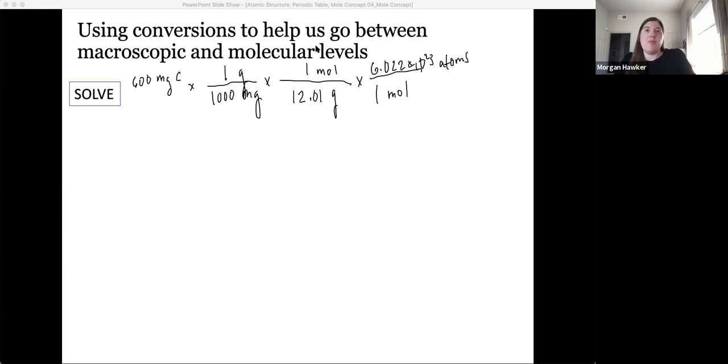Next, I need to convert from moles to number of atoms. I know that in every one mole, there are 6.022 times 10 to the 23rd atoms. So now when I do this problem, milligrams cancels, grams cancels, moles cancels, and I'm left with a number of atoms. Remember that that's what I wanted in my problem from the beginning. When I do this calculation by multiplying all the numbers on the top and dividing by all of the numbers on the bottom, I get an answer of 3.01 times 10 to the 22nd atoms.